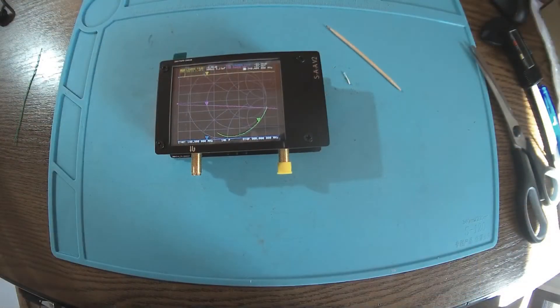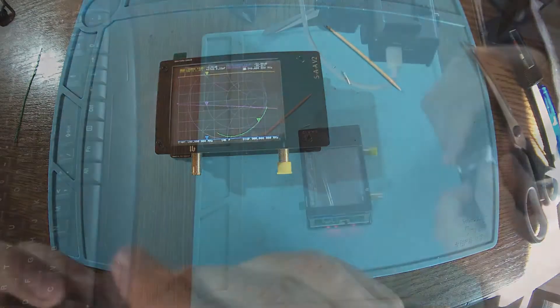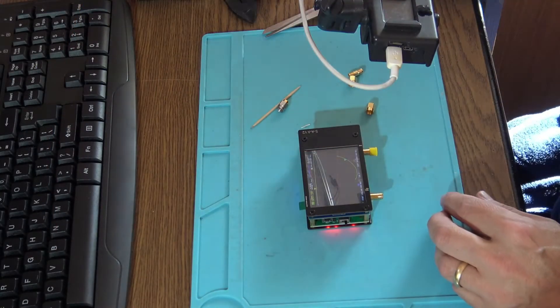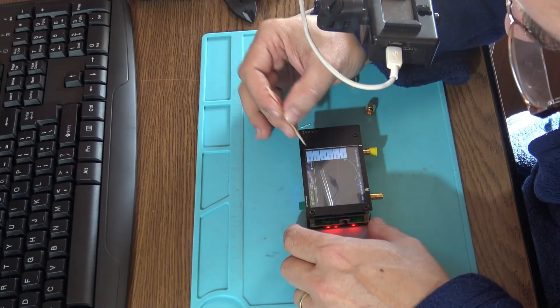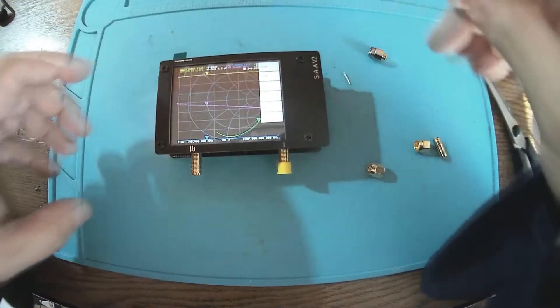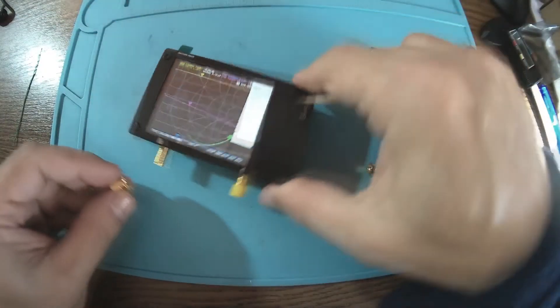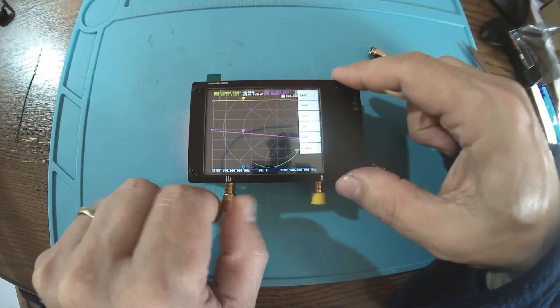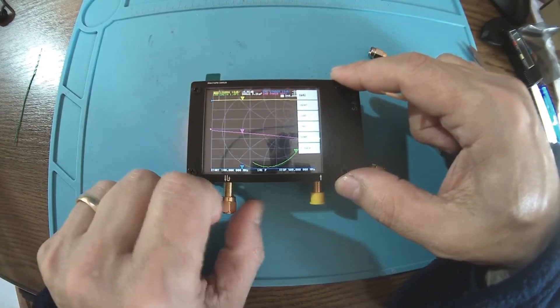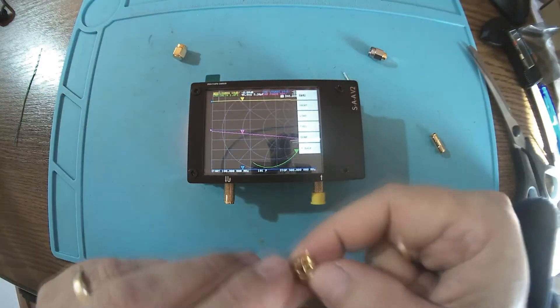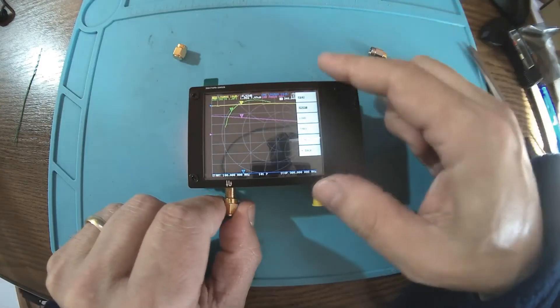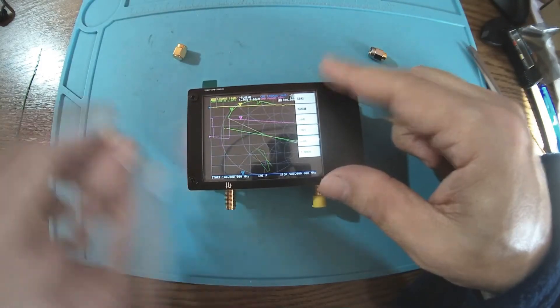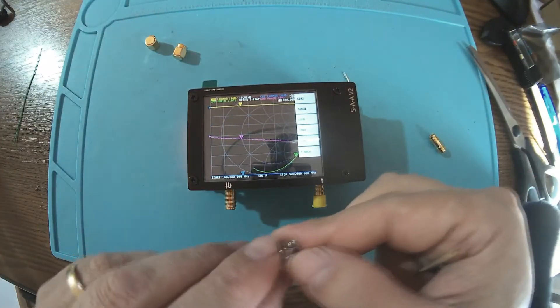Like always, we should start with calibration, and we have those three fake antennas: open, short, and load. Calibrate open, this is the open one. Now short, that's the short one. And now the load. Okay, so now the machine is calibrating.